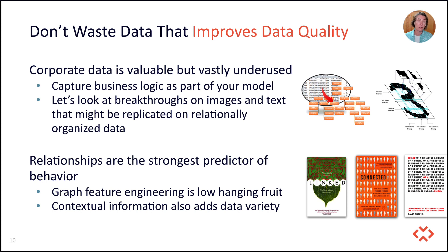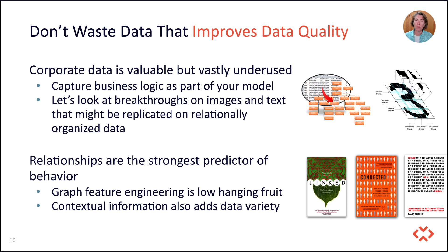We also need to look at different types of machine learning and breakthroughs on things like images and text that maybe we could replicate, or at least try to replicate, on relationally organized data. The other thing we should absolutely be looking at are the relationships themselves, just like we were talking about with bicycle buying behavior. We know, based on years of research, that relationships are the strongest predictors of behavior. Graph feature engineering is something you could do to improve your machine learning results right away — it's very much a low-hanging fruit.